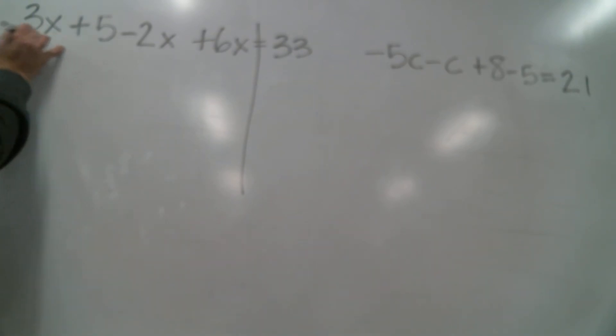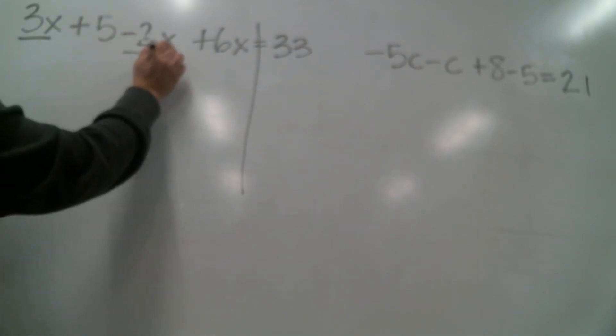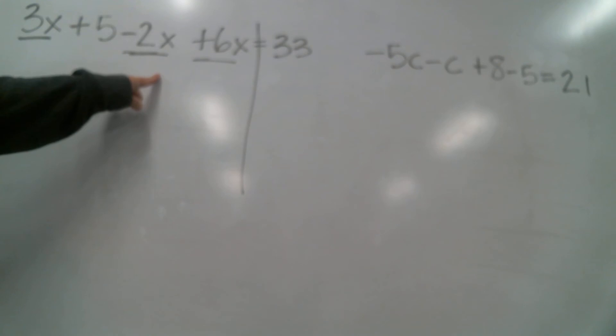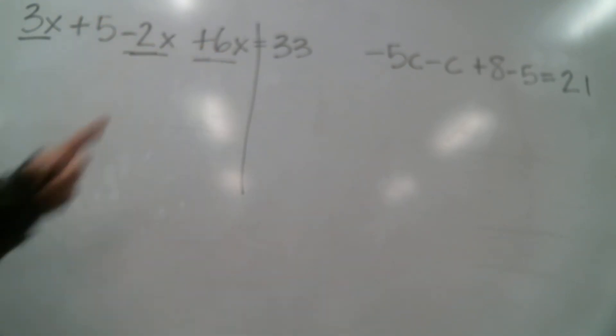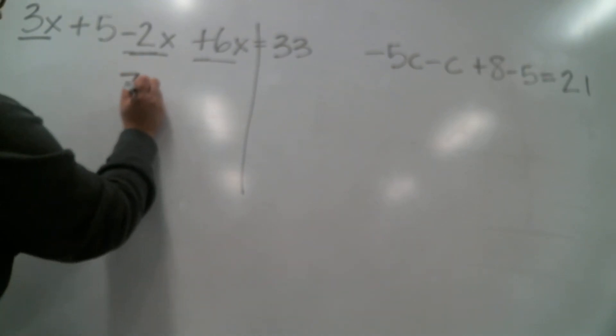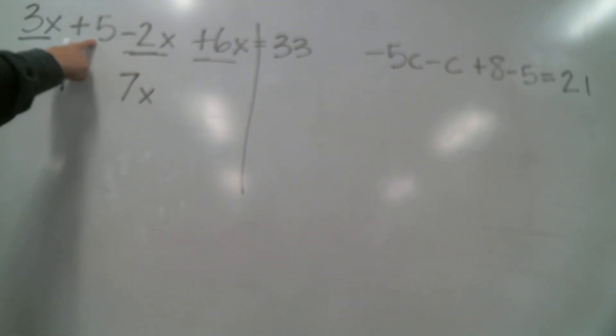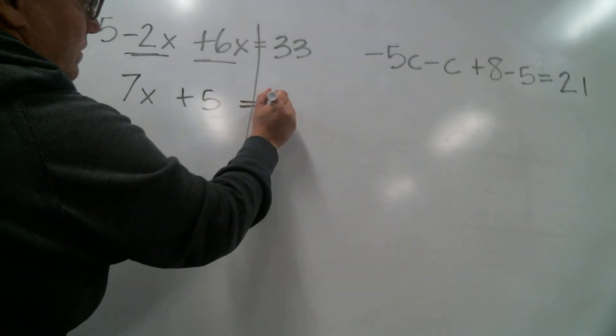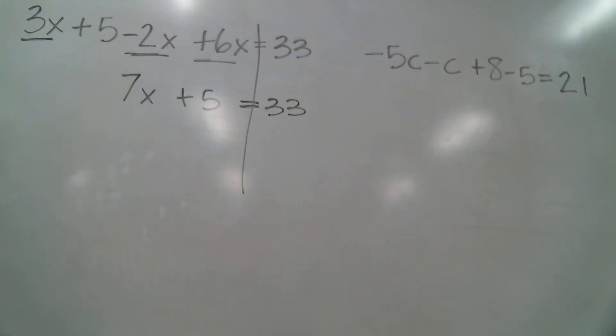And in this case I've got a 3x, I've got a negative 2x and a positive 6x. They're all x's so they can all be combined up together. So 3x minus 2x would just give me 1x. And then plus 6x gives me a total of 7x. So I'm gonna rewrite it and I have 7x. And here I'm looking, I'm left with a positive 5 and there's no other like terms. There's no other plain whole numbers. So I'm just gonna leave it as 7x plus 5 equals 33.